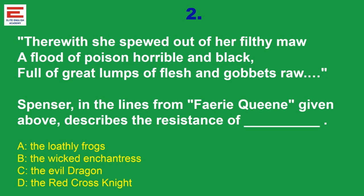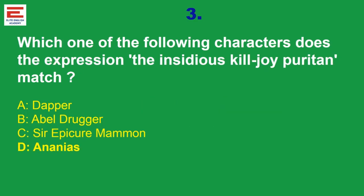The next question: which character does the expression 'the insidious killjoy Puritan' match? The answer is option D, Ananias. This is from The Alchemist. If you go through the text carefully, Ananias is the character described by that expression.